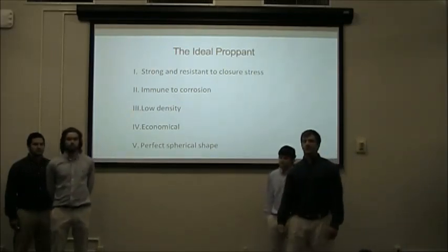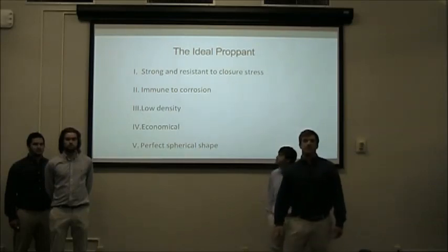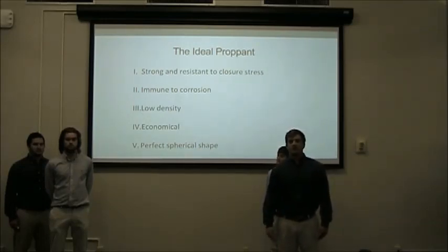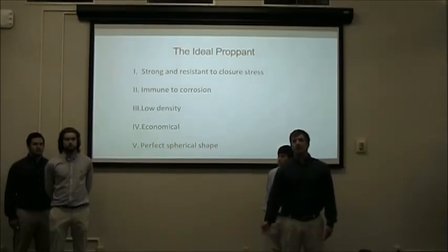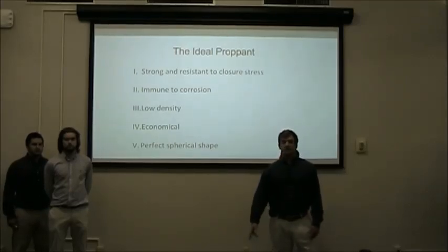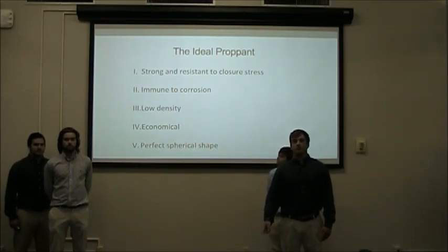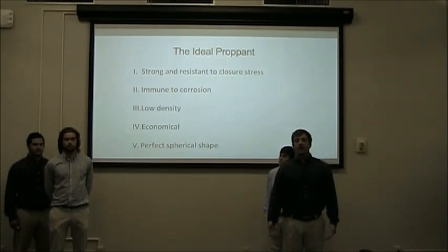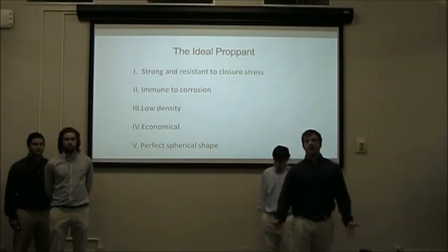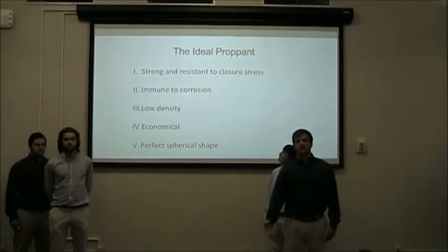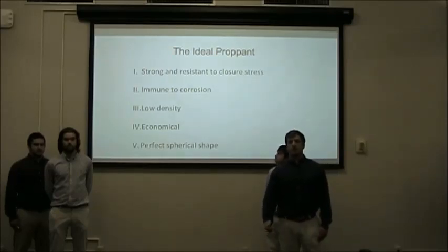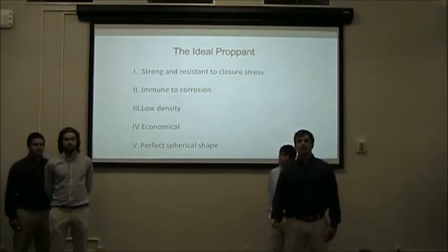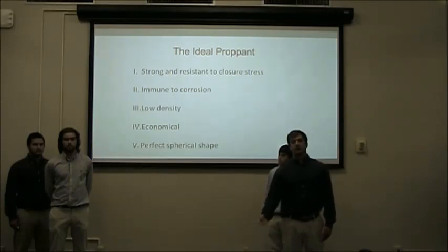There are three main types of proppants used today. The first is silica sand — it is cheaper, lower quality sand used mainly for shallow, low pressure wells. The second two proppants are resin coated proppants and ceramic proppants. These are more expensive and higher quality, used for deeper, higher pressure wells. Each of these has its advantages and disadvantages and should be chosen based upon geology, availability, price, and government regulations.